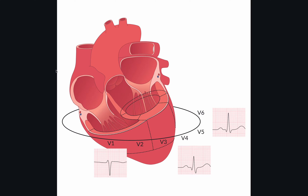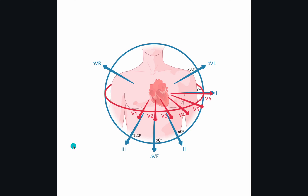All right, so let's talk about R-wave progression, which is an important part of ECG analysis. R-wave progression pertains to the precordial leads. Here we see the 12 leads of an ECG. In blue, we see the limb leads, and in red, we see the precordial leads.